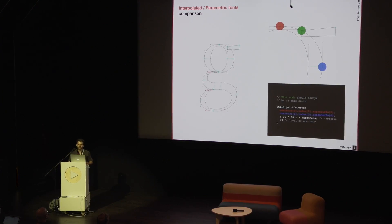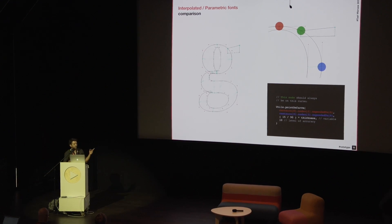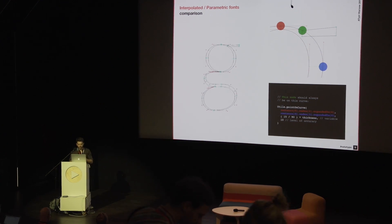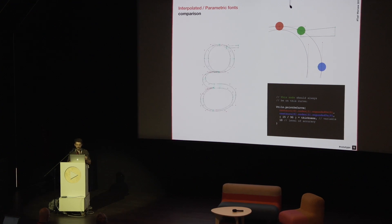Parametric fonts are different in that there is only one master. Instead of following design rules and applying them across different masters, you express those rules using code and let the computer follow them. In this little example, you can see that using a little code, you can give instructions to the computer to always keep a point in a contour, to always make it follow a curve in another contour — and that's something that isn't always possible with interpolated fonts.